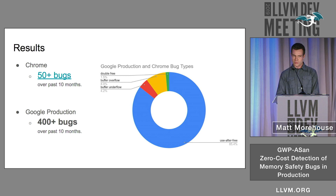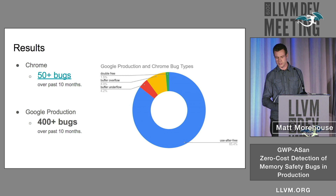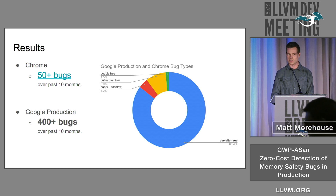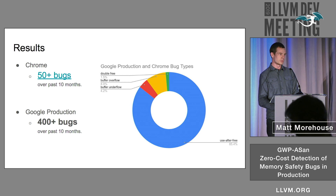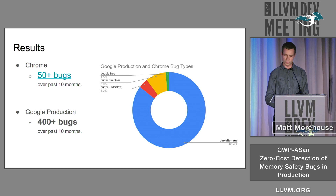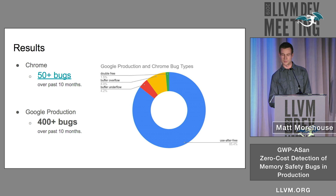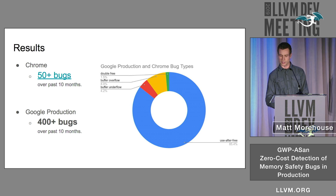In the past 10 months, GWP-ASAN has found over 50 bugs in Chrome and over 400 bugs in Google production code. These bugs have mostly evaded all forms of testing — whether fuzz testing, unit testing, or using sanitizers — and were only found in production running with GWP-ASAN. As you can see in the chart, the vast majority of bugs GWP-ASAN has found are use-after-free, but it also finds buffer overflows and underflows, and a small amount of double-free.